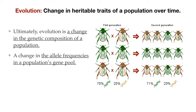But in the second generation, there is a change in the frequency of these alleles in the population, and now 71% of the alleles are green and 29% of the alleles are brown. Now, this population is changing, as the brown allele is becoming more common in the population from one generation to the next.